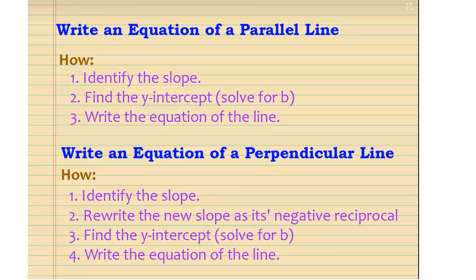To write an equation of a parallel line, we will use our slope-intercept form, y equals mx plus b, or we can use our point-slope form, y minus y1 equals m times x minus x1. In either case, we will need to find a slope and an independent point.